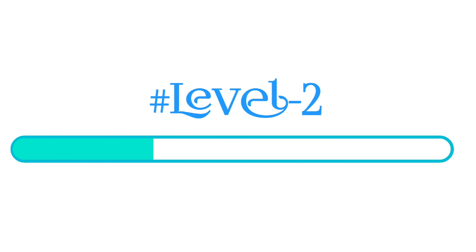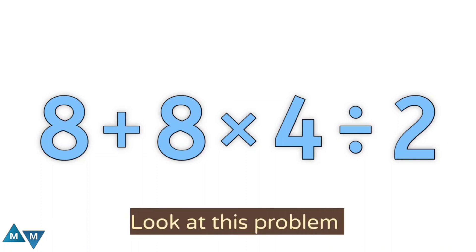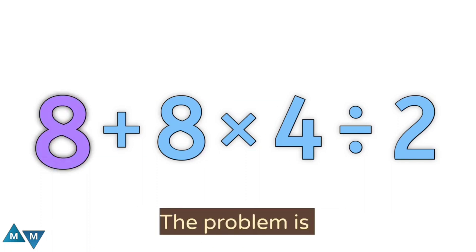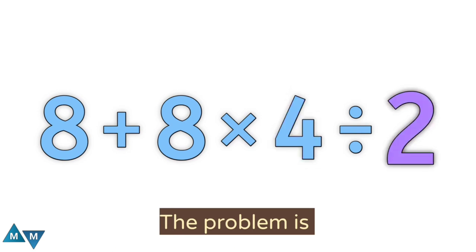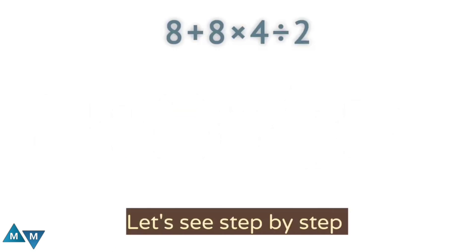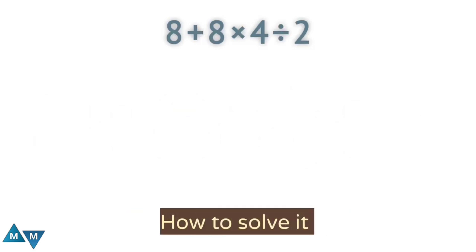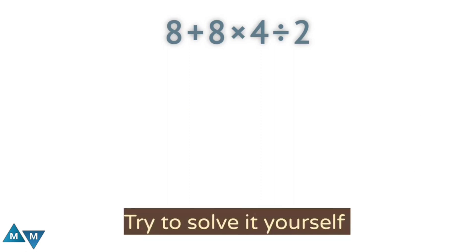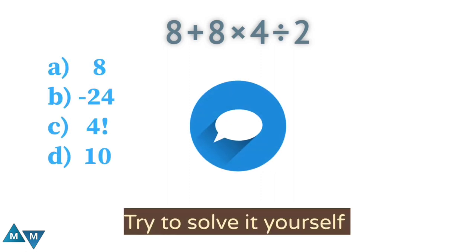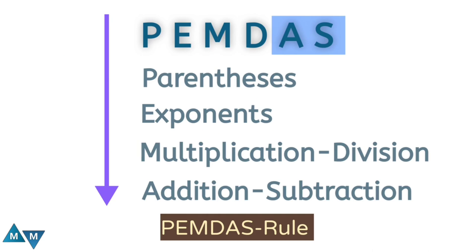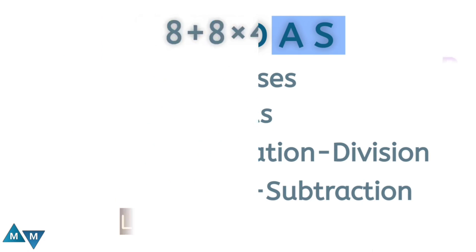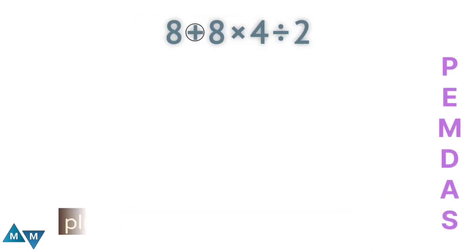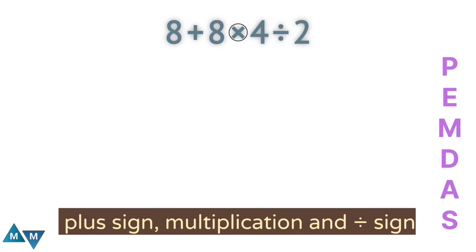So here is the second problem. The problem is eight plus eight times four divided by two. Let's see step by step how to solve it. Try to solve it yourself and comment below. Which of the following options is correct?